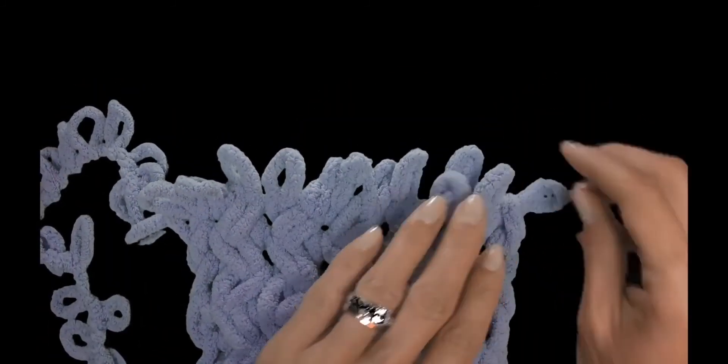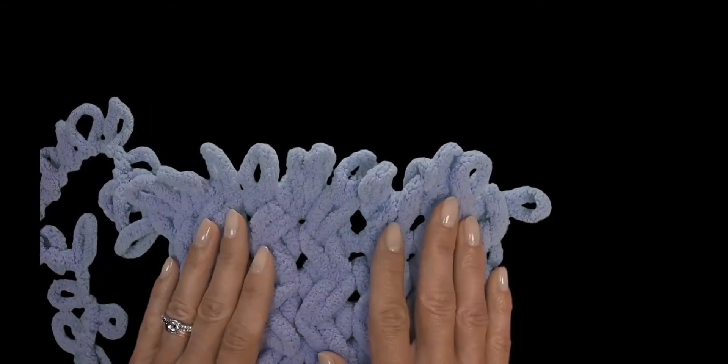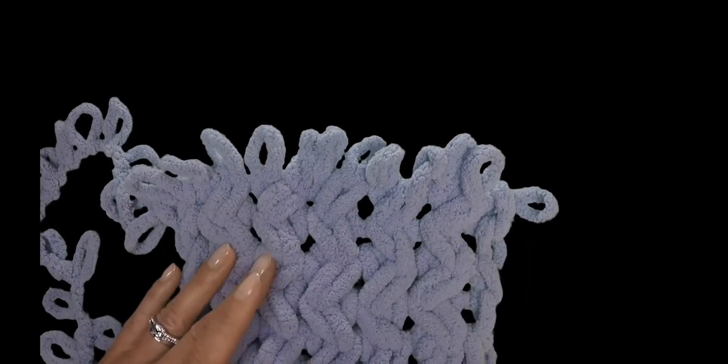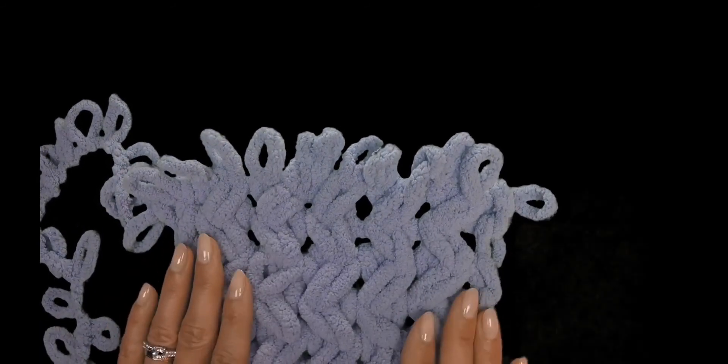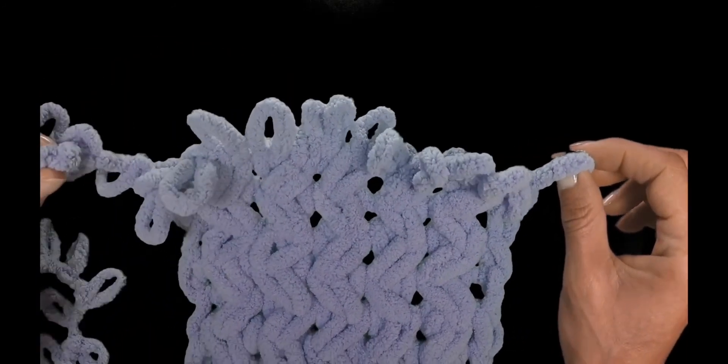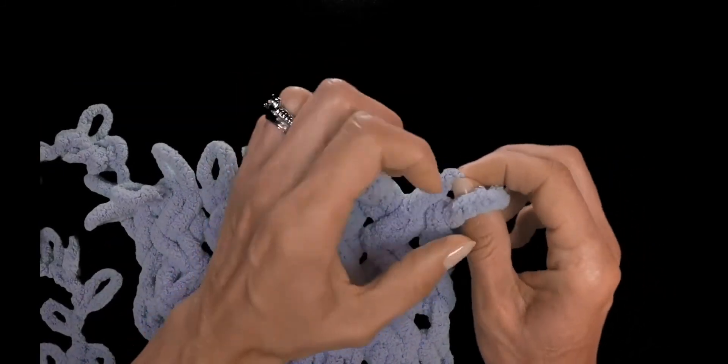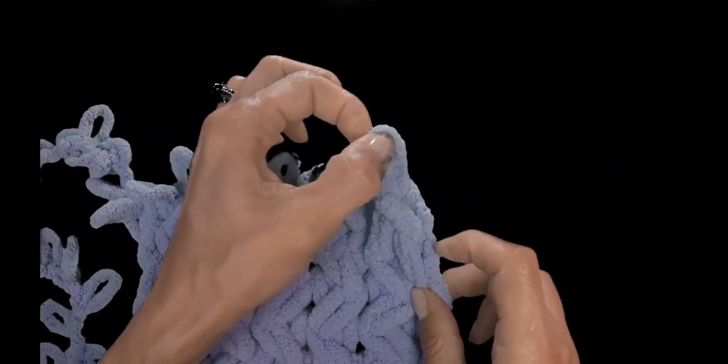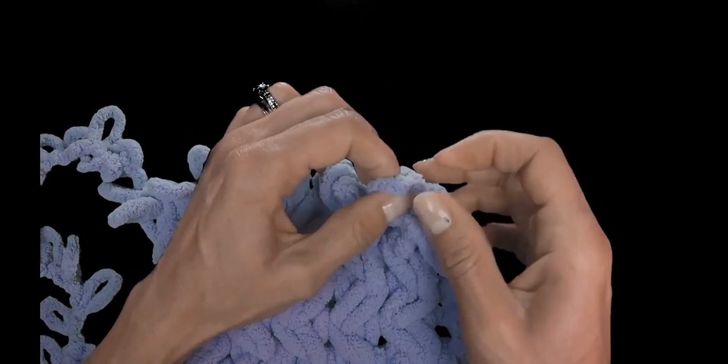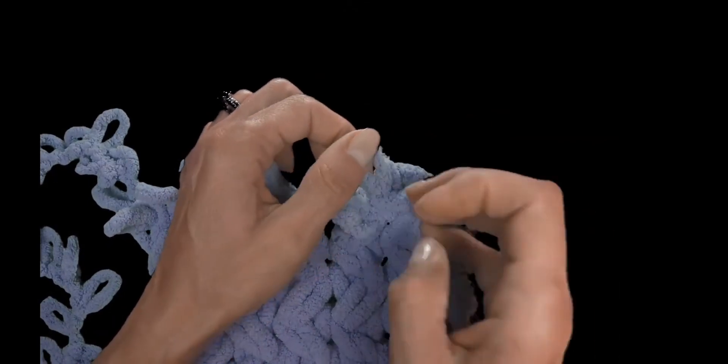Closing the stitches is the absolute same as on any other models or patterns when using this type of thread. It's done pretty easy. I'll show you right now. Whenever you close out, your working thread has to stay on the opposite side. You're closing out the stitches from the opposite side of the working thread.